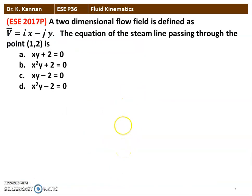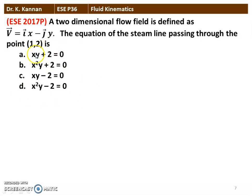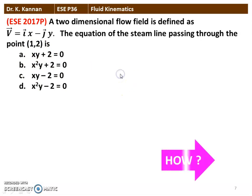The next question from the 2017 question paper: a two-dimensional flow field is defined as V = iX - jY. The equation of the stream line passing through the point (1, 2) is — we have the same question but the point values are changed: X = 1 and Y = 2. The correct answer among the four options is XY - 2 = 0. We will see how in the next slide.